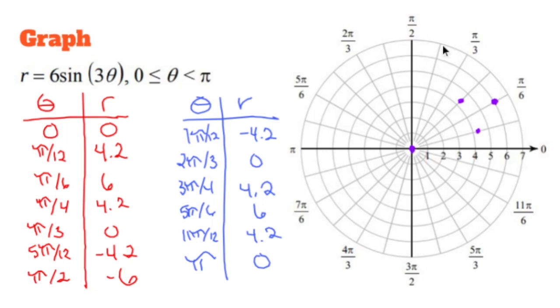Pi over 3 is going to be 0 again. Okay. 5 pi over 12 is going to be negative 4.2. So if regular 4.2 would be here, then I'm going to follow the line and make sure it's at negative 4.2, which is that guy right there. Half a pi is going to be negative 6. So negative 6 is that dot.